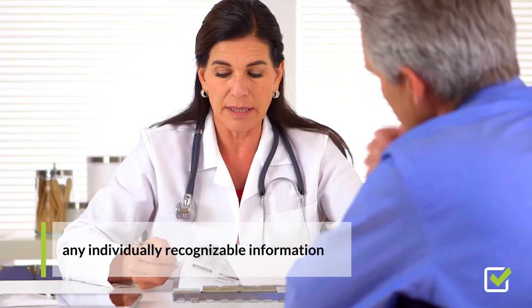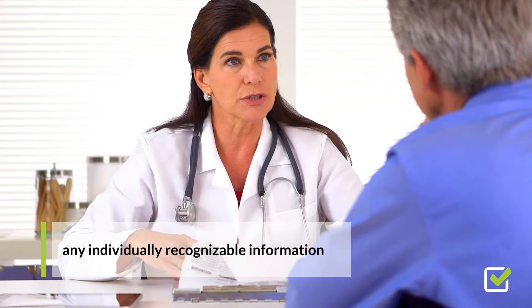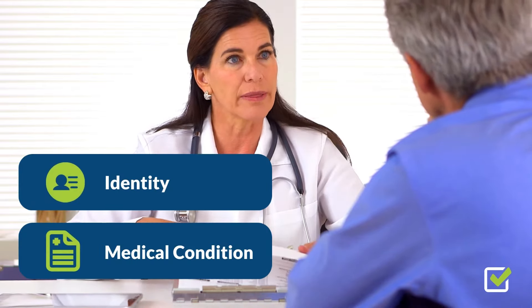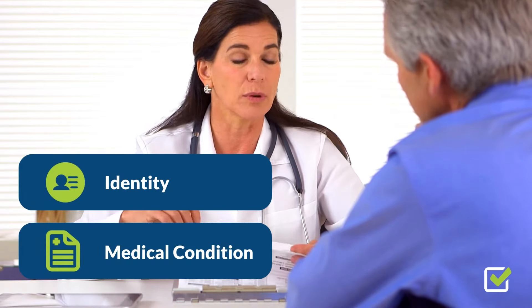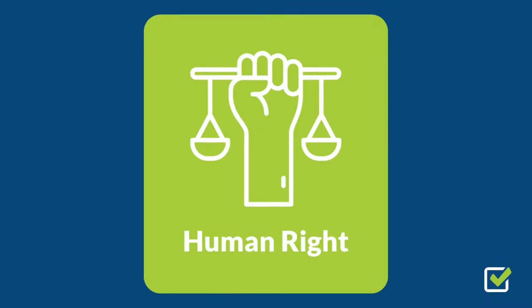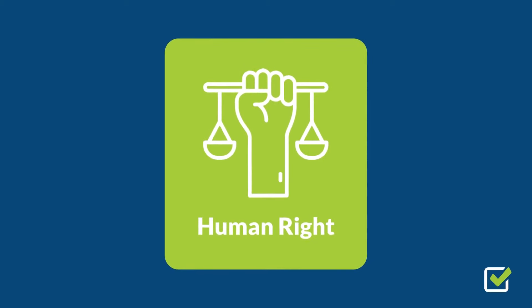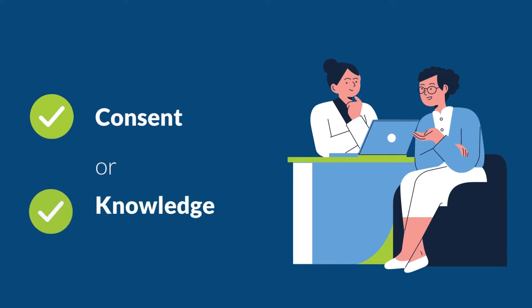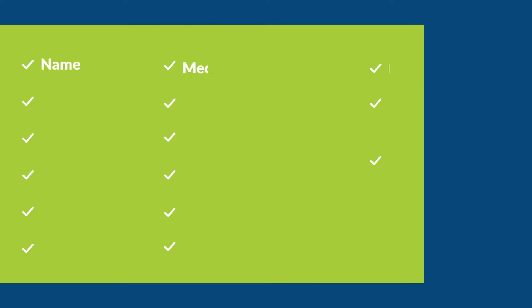PHI is legally defined as any individually recognizable information about a patient's identity or medical condition. In a nutshell, HIPAA defines privacy as a human right and prevents any unauthorized disclosure of PHI without the patient's consent or knowledge. Here is a preview of some well-known PHI identifiers.